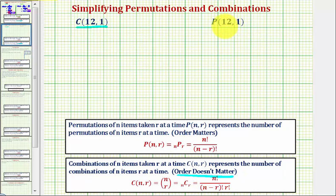And here we have 12 permute 1. When working with permutations, the order does matter.